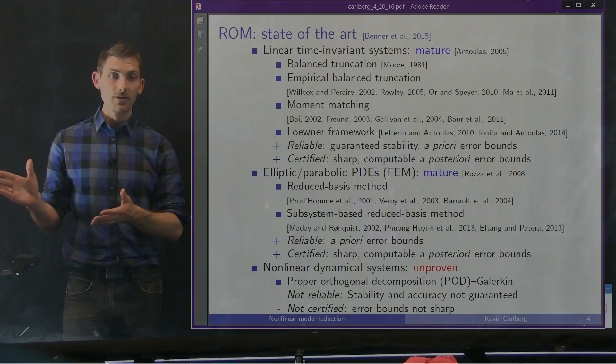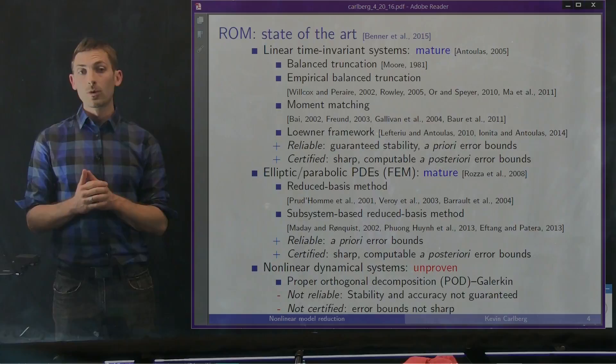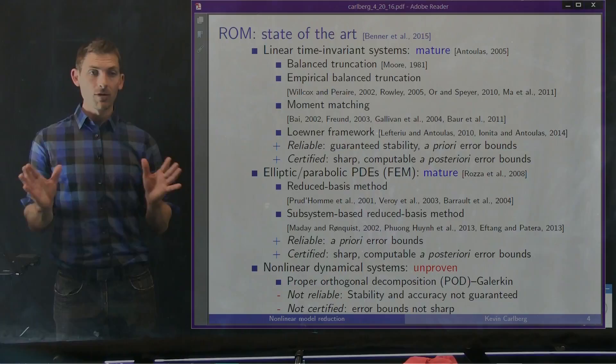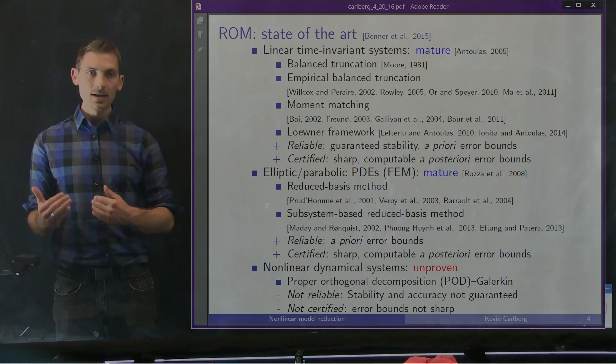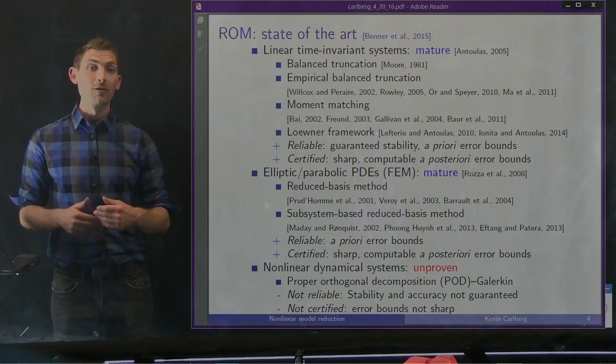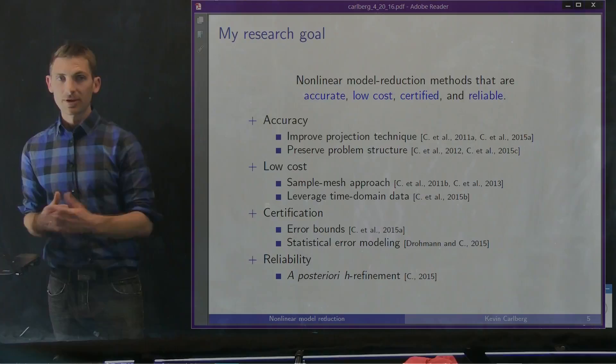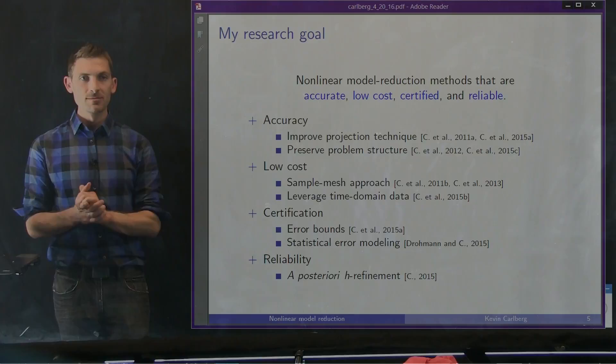However, when we turn to nonlinear dynamical systems — such as those characterizing compressible fluid dynamics problems — reduced order models are largely unproven. The dominant method in the literature up until about six or seven years ago was proper orthogonal decomposition, or POD Galerkin. This method is known to be not reliable in the general case: stability and accuracy are not generally guaranteed, and it is not certified — error bounds tend to grow exponentially in time, making them not sharp and often very pessimistic.